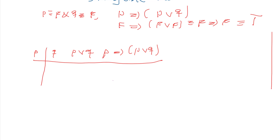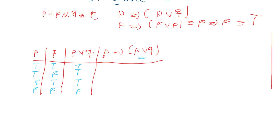We will draw a table. The number of rows will depend on the number of statements. The combinations are: true-true, true-false, false-true, and false-false. P or Q is false only when both are false; otherwise it is true. For P implies P or Q: true implies true is true; true implies true is again true; false implies true is true; and false implies false is also true. All four combinations are true, which means P implies P or Q is always true — it is a tautology.